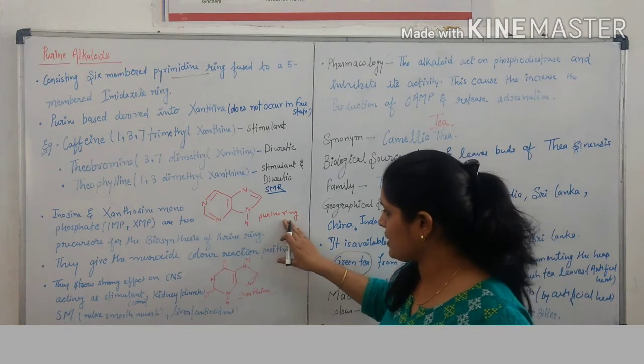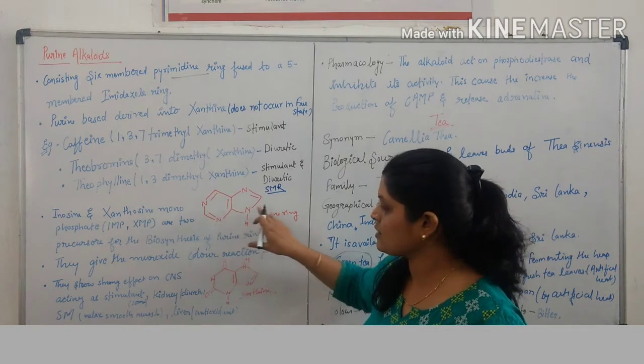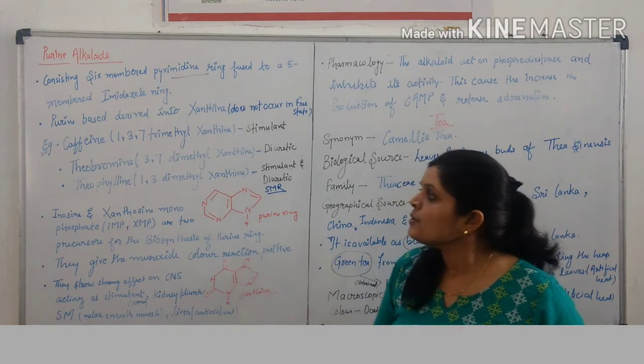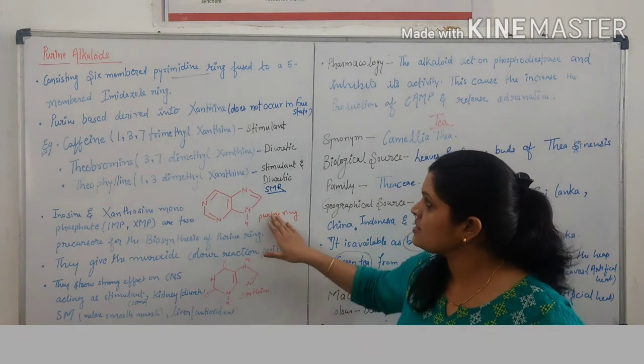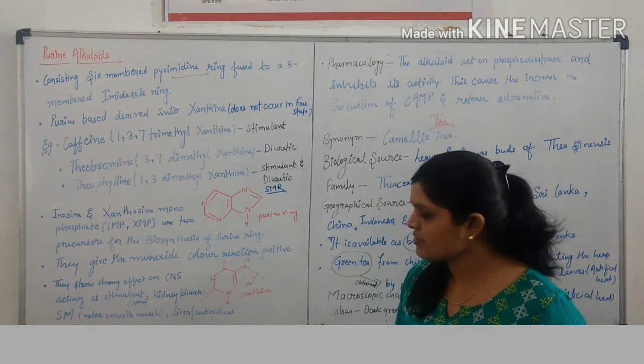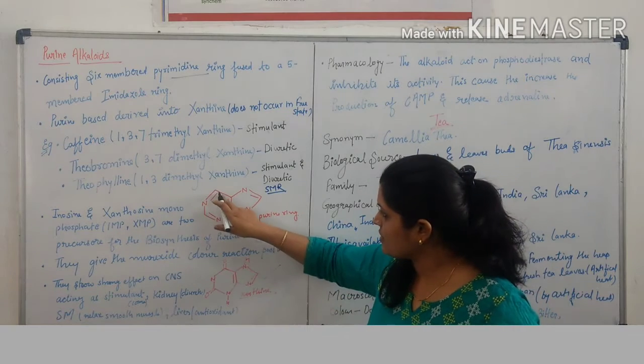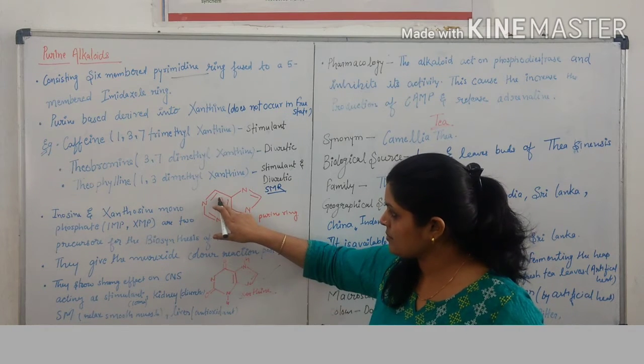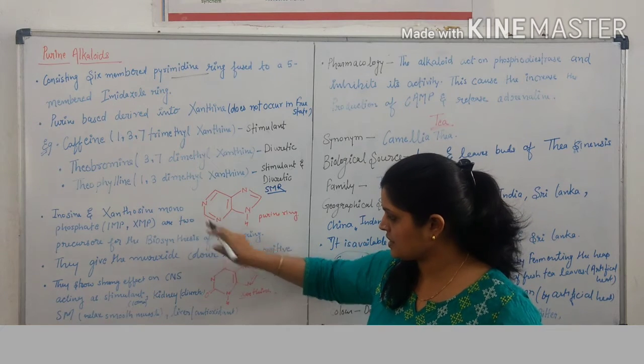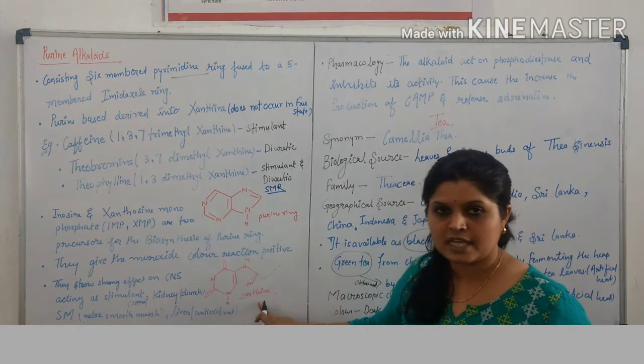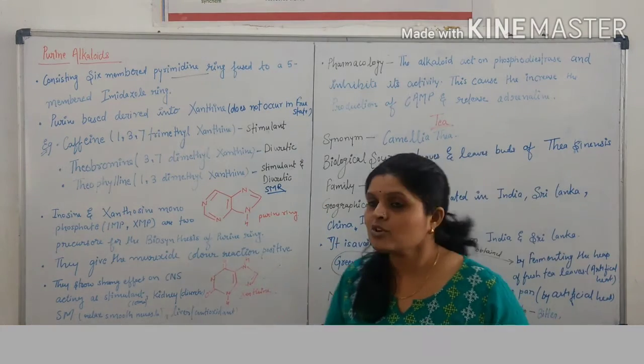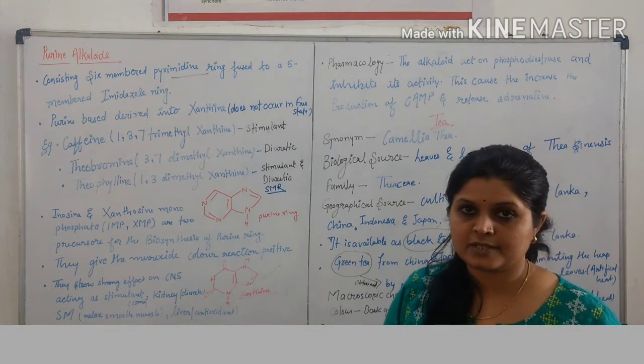Purine ring contains 4 nitrogen atoms. Purine is converted into xanthophyll. This is the structure of xanthophyll. Here, oxygen atoms are attached, then converted into xanthine moiety. Xanthine does not occur in free state.